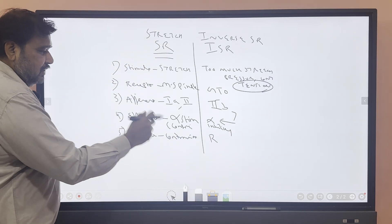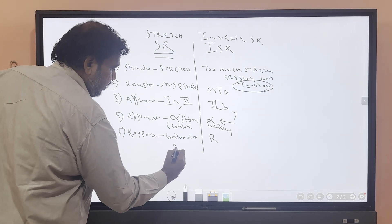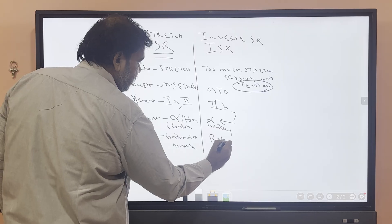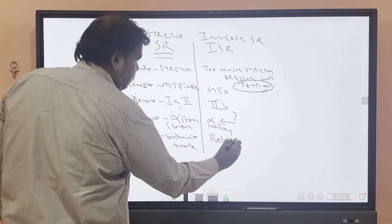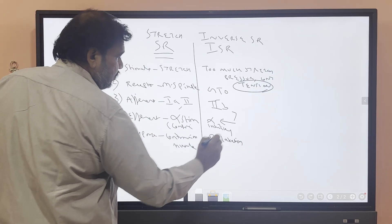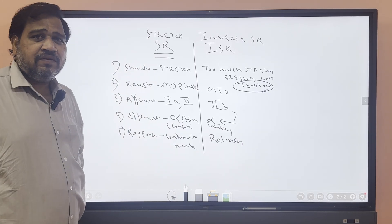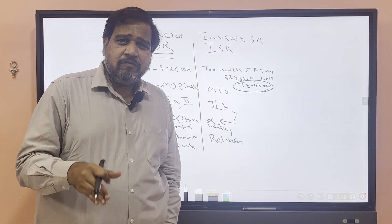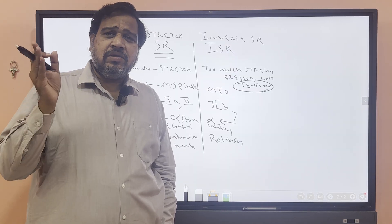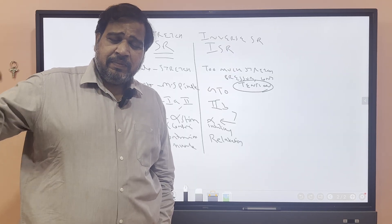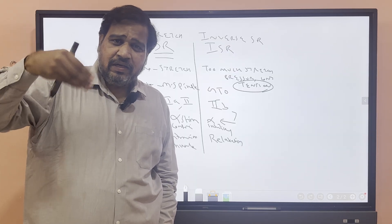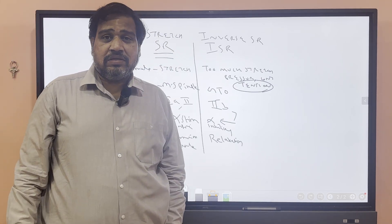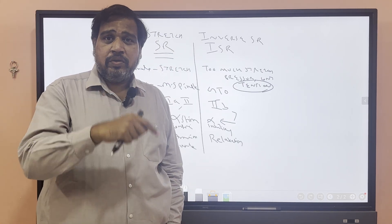The response in stretch reflex is contraction of muscle; in inverse stretch reflex it is relaxation of the muscle. Inverse stretch reflex is also an example of auto-inhibition — the muscle keeps on contracting and you inhibit your own muscle contraction.